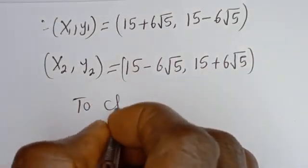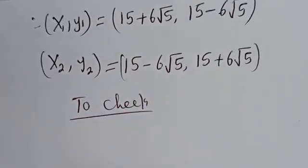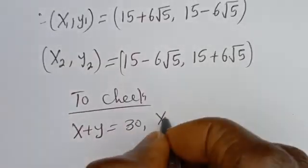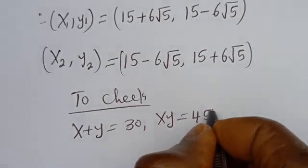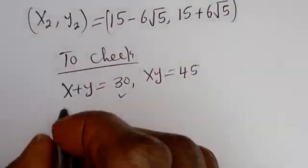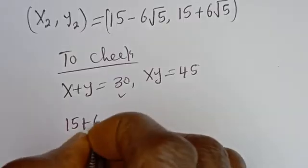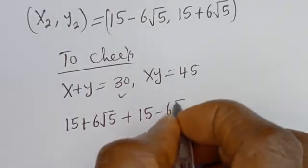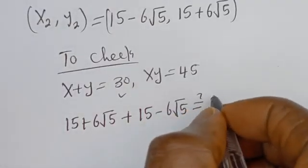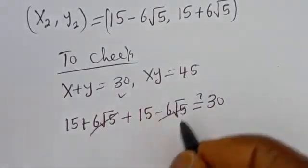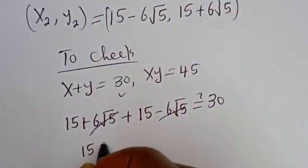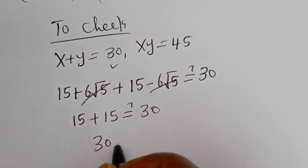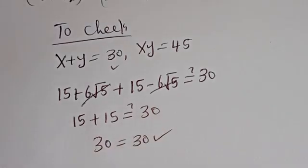To check: we have x plus y equal to 30, and xy equal to 45. Let's consider x plus y first. This is (15 plus 6 root 5) plus (15 minus 6 root 5), which must equal 30. The 6 root 5 terms cancel, giving us 15 plus 15, which is 30 equals 30. This is true.